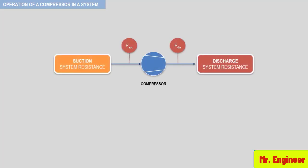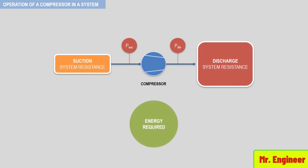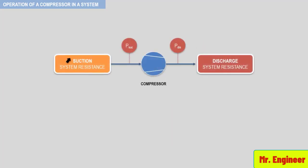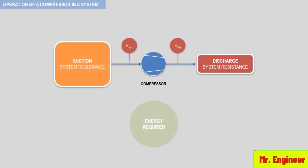Increasing discharge system resistance with a constant suction resistance will result in higher compressor energy required. Also, increasing suction system resistance with a constant discharge system resistance will result in increasing compressor energy required. Many times, the concept of increasing suction system resistance, or suction throttling, is misunderstood. This will be discussed in detail in this section.